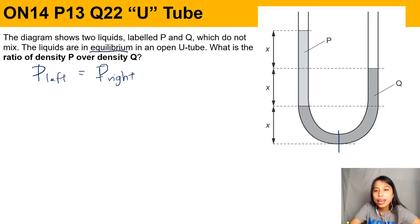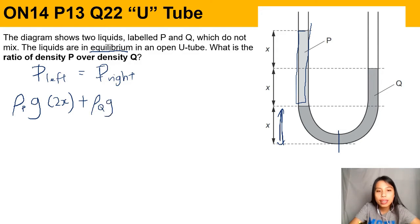So on the left side, what do we have? We have this very light colored liquid there, so that will be ρ of that liquid P times g times the height which is 2x. That's the height of that light liquid. Plus, here I'm going to show you why we can ignore the bottom part. So let's say we want to plus this bottom part also. That will be the old liquid Q, so density of Q times g times x—that's if you want to consider that bottom part.